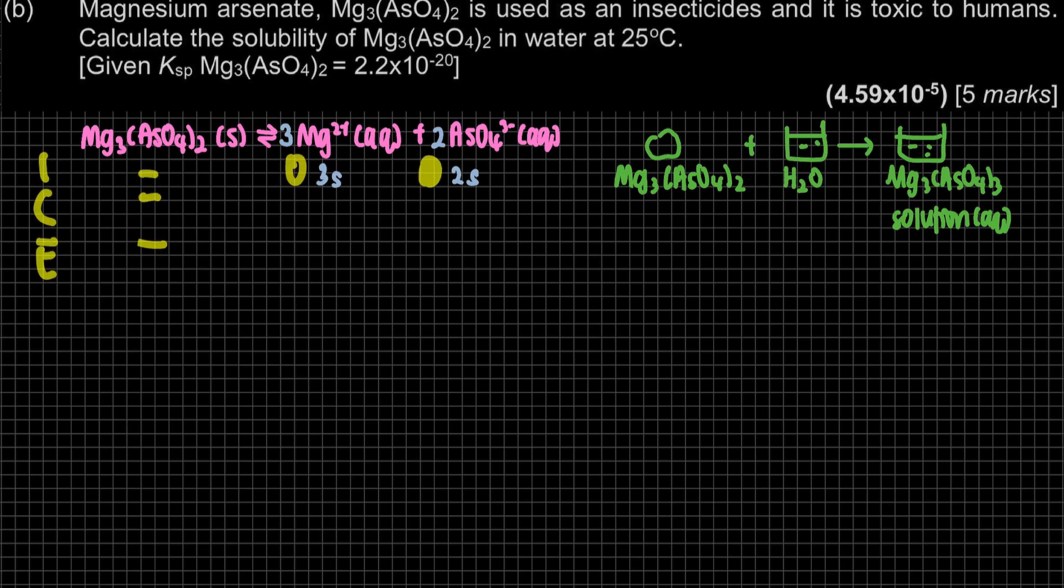ICE table only for gas or aqueous. So this is not included. This one is 0, 0 initially. For product initially, it will be 0. But for the changes here, it's positive 3S. Here, positive 2S. For the case of Chapter 7, our solubility must be S, not X. Usually we're talking about X, but it's not. So the equilibrium here, 3S, 2S.